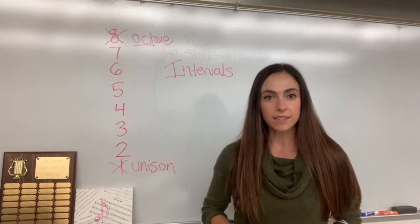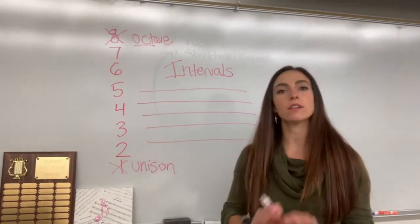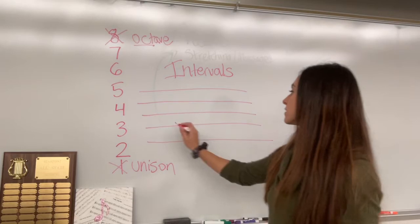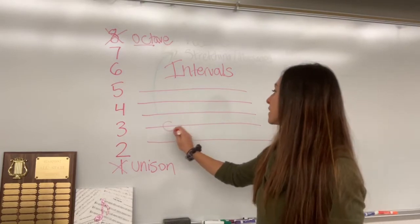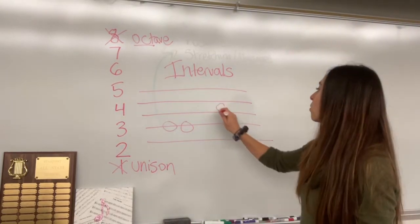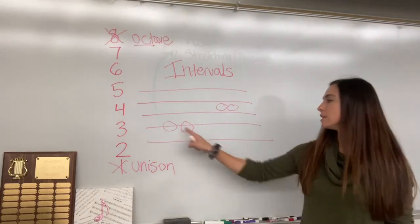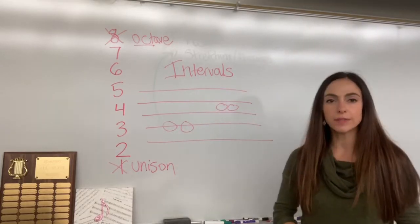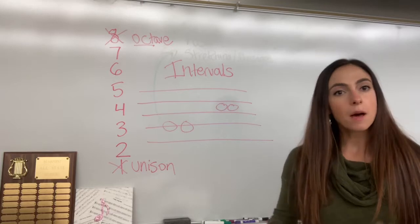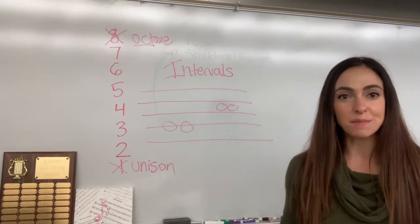Let's practice intervals right now. Notes that are the same are called unison. You can see notes that are the same on the staff because they're literally on the same line or on the same space. These two notes are unison, these two notes are unison. Two unison notes would sound like this — literally the same note.